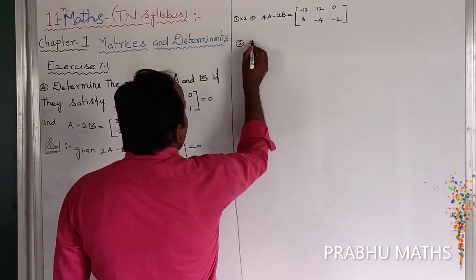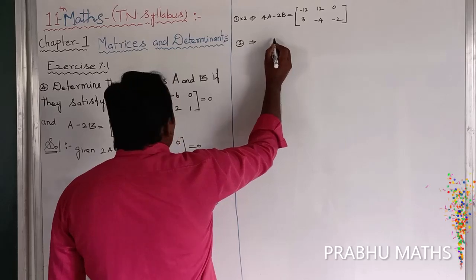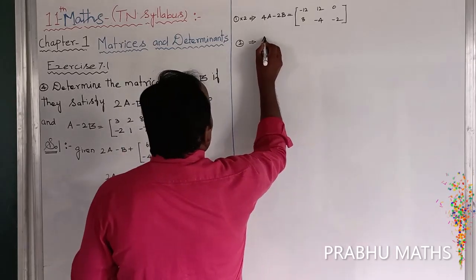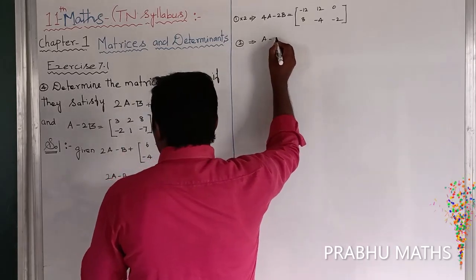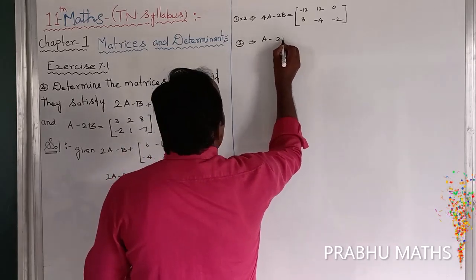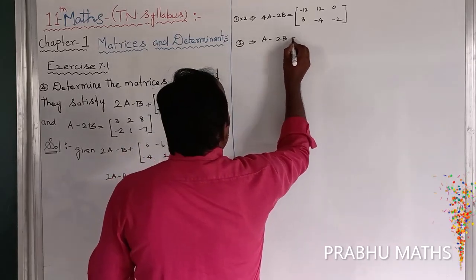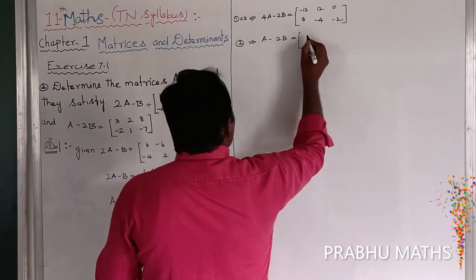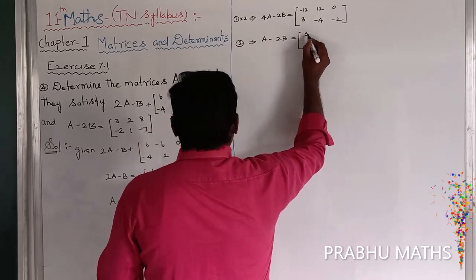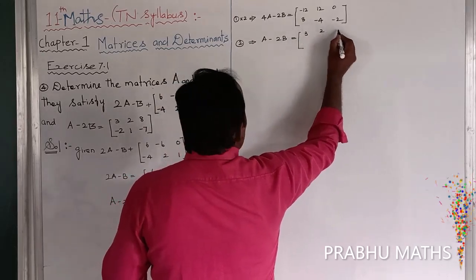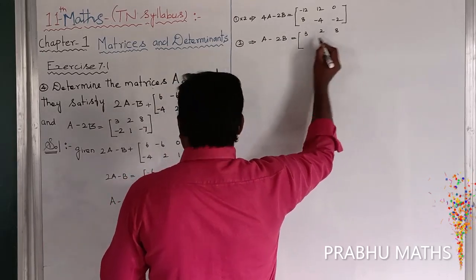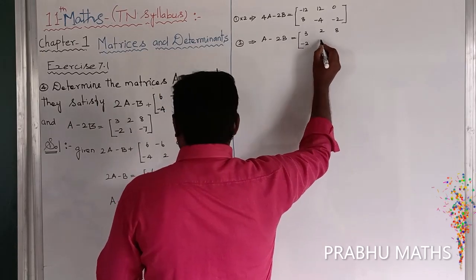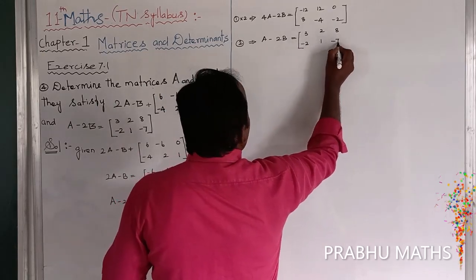There are no changes to equation number 2, directly apply. So A minus 2B is equal to: 3, next 2, next 8, next minus 2, next 1, minus 7.